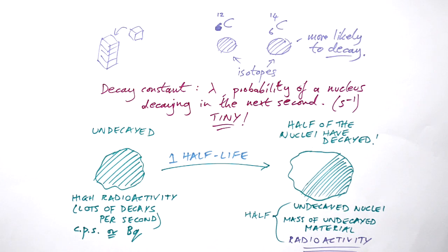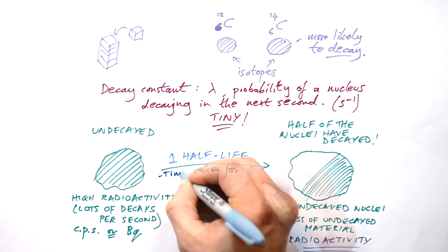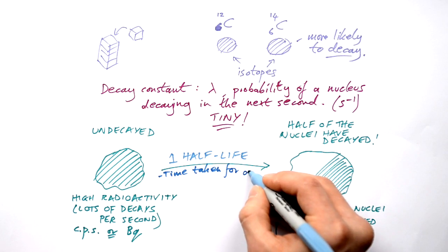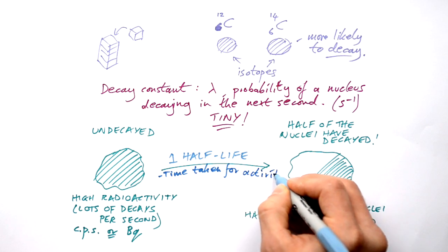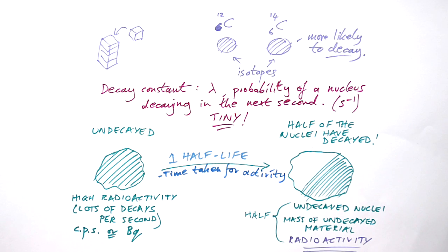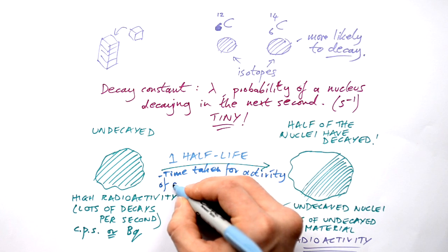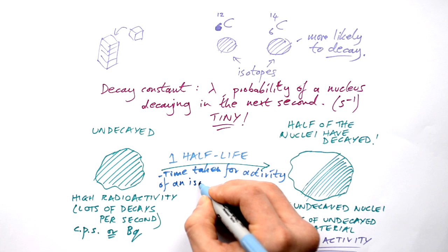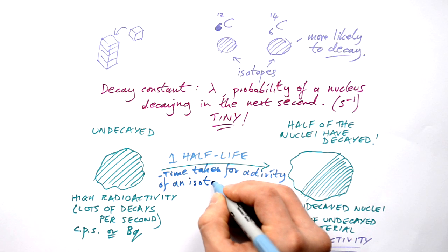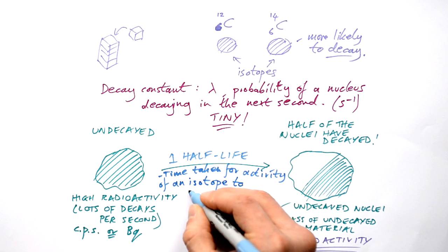So if you want a textbook definition for what a half-life is, it's the time taken for the activity — or radioactivity, we can call it activity for short — of an isotope to halve.